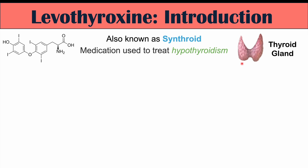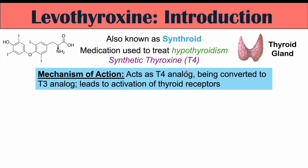This medication is used to treat hypothyroidism, which is a low functioning thyroid. The thyroid is a gland in the neck responsible for creating thyroid hormones. Levothyroxine or Synthroid is synthetic thyroxine or T4, one of the hormones produced by the thyroid gland. It acts exactly like T4, which is a less active form of thyroid hormone.